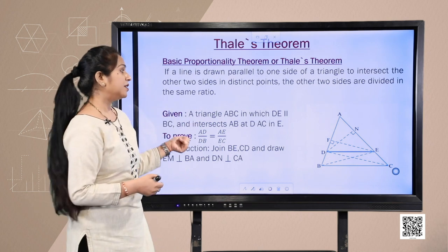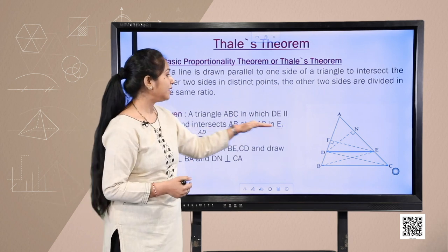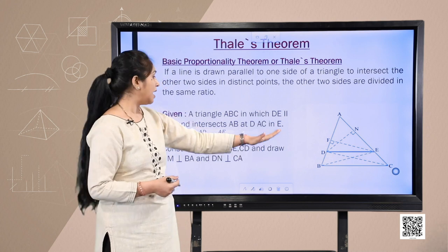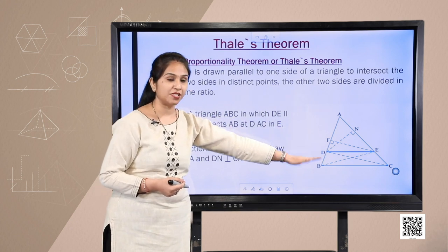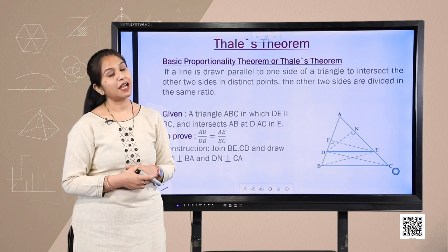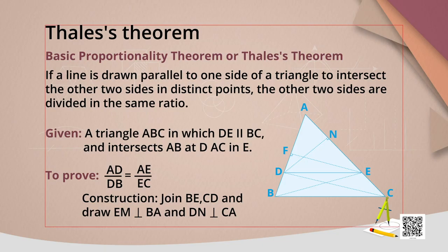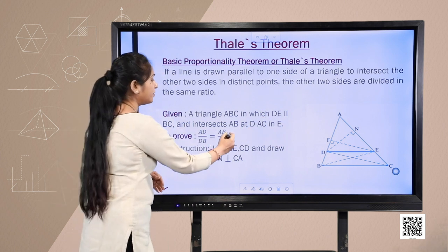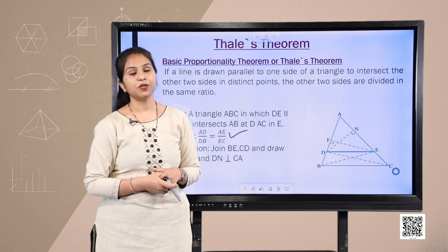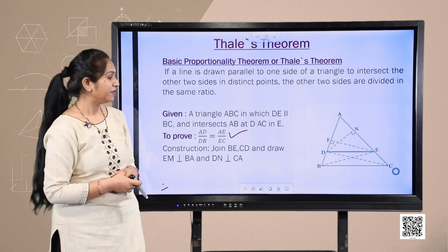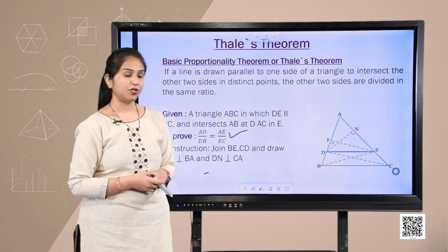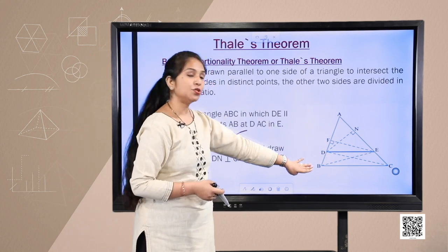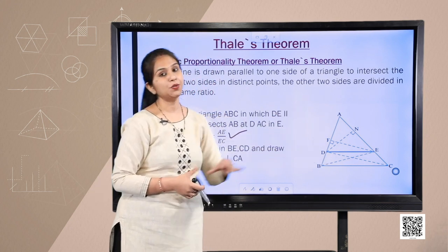Given: In triangle ABC, line DE is parallel to line BC, and DE intersects AB and AC at two distinct points D and E. To Prove: AD/DB = AE/EC. Construction: Join lines BE and DC. Also draw EN perpendicular to AB and DM perpendicular to AC.